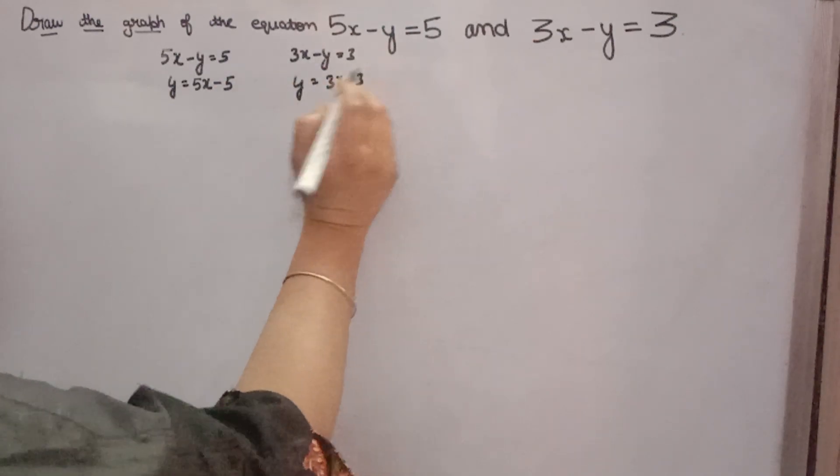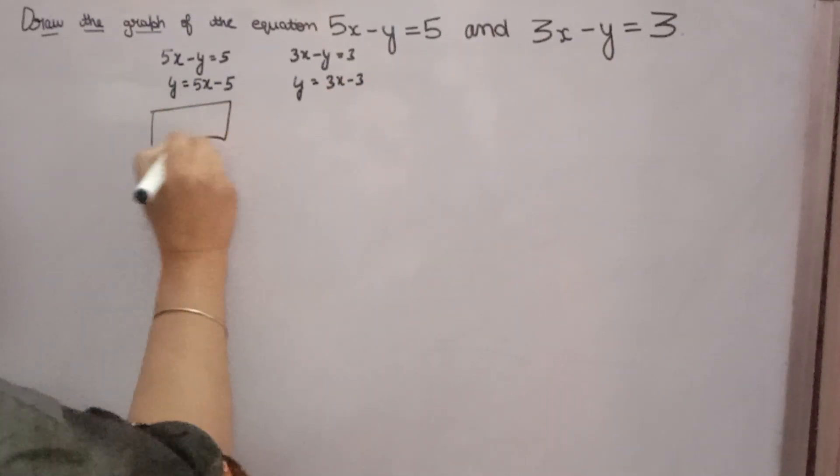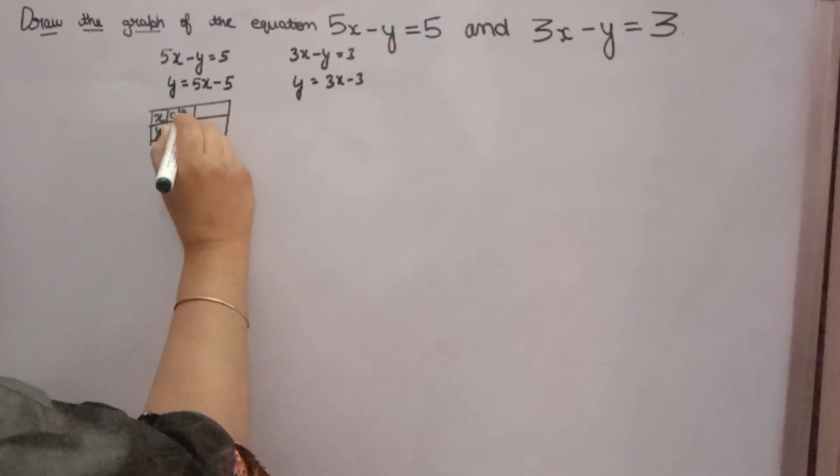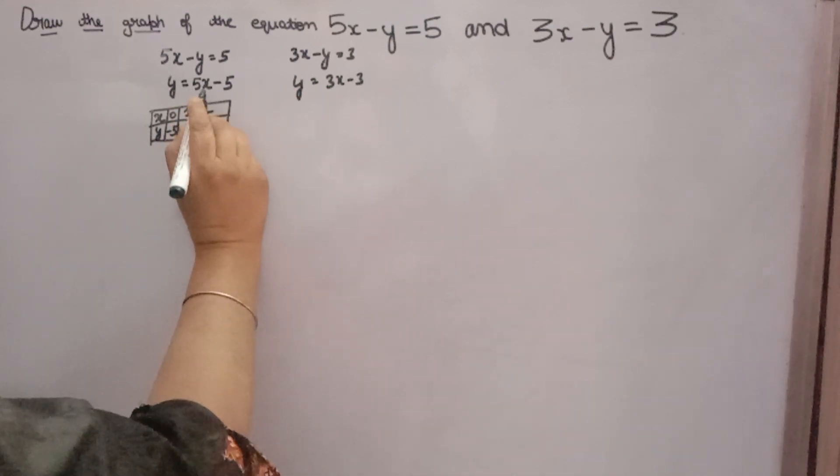Now make a table with x and y. Give different values and find the value of y. If x is 0, y is minus 5. If x is 1, y will come 0. If x is 2, y will come 2 into 5, 10, 10 minus 5. So this is the table for the first equation.